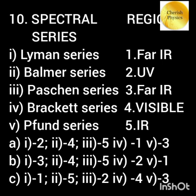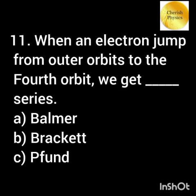Match the spectral series with their corresponding electromagnetic region. When an electron jumps from outer orbits to the fourth orbit, we get the Brackett spectral series.